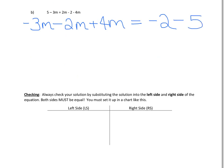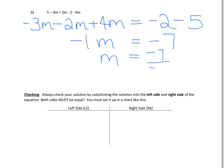Now we want to simplify, collecting like terms. We've already identified that these are all m terms, so they are all like terms. We have negative 3 minus 2 is negative 5, plus 4 is negative 1m. On the right-hand side, negative 2 minus 5 is negative 7. We want it to just be an m here and not have the negative 1. There's multiplication happening between them, so we do the opposite — we divide the negative 1 to the other side. So m equals negative 7 divided by negative 1, which means m equals 7.